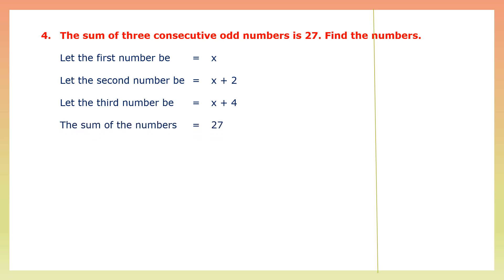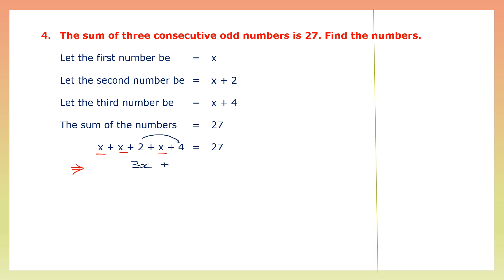Let the second number be x plus 2 and the third number be x plus 4, since the difference between odd numbers is 2. The sum of all three numbers is 27, so x plus x plus 2 plus x plus 4 equals 27. Collecting x terms: 3x. The whole numbers: 2 plus 4 is 6. So 3x plus 6 equals 27, giving us 3x equals 27 minus 6, which is 21.